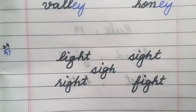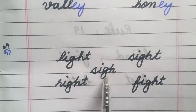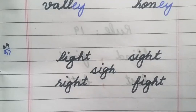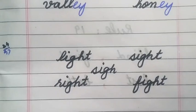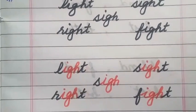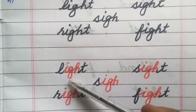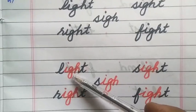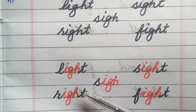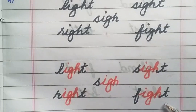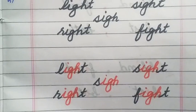Students, now there are four more words: light, sight, sigh, right, and fight. You will identify what is common here. I hope you have identified it. The common element is I-G-H. This phonogram has only a single sound — the I sound. The words are light, sight, sigh, right, and fight.